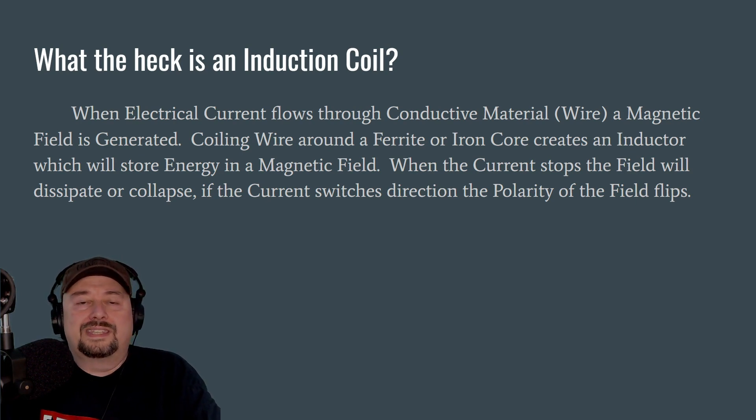We're going to talk more about that later. When the current stops flowing through your conductive material, this magnetic field will collapse or dissipate. If the current switches direction, the polarity of the field flips. And we're going to talk more about that in the coming slides.